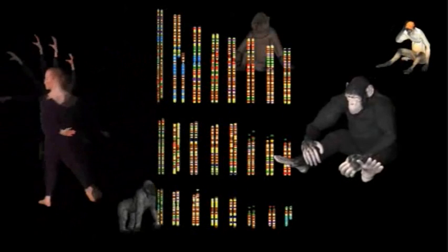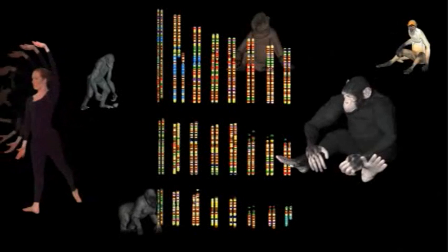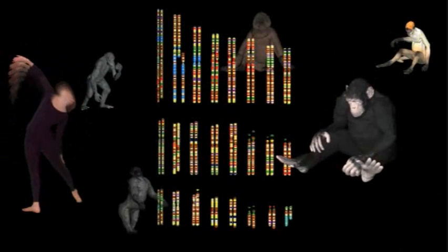There are many examples of pseudogenes shared between primates and humans. One is the Psi-Ada globin gene, a hemoglobin pseudogene. It is not shared by all mammals, only the primates.